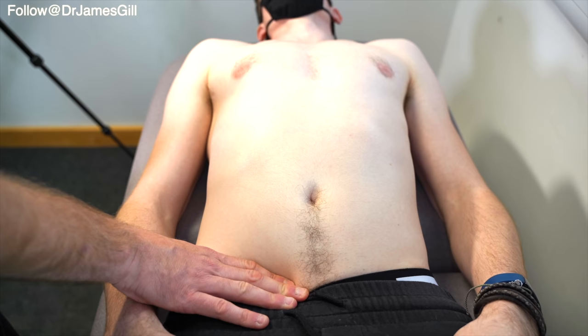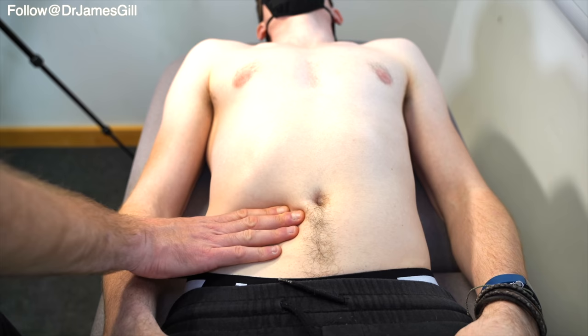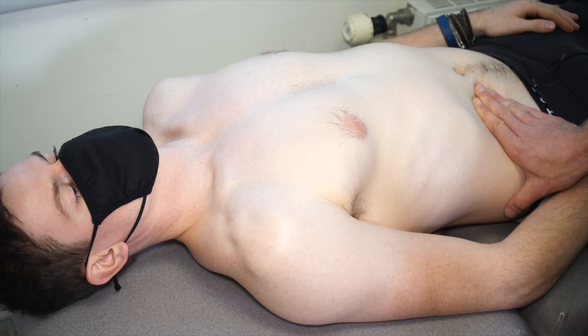After we've done the light and deep palpation we need to do some special examinations for both the spleen and the liver. In both cases we're going to start off in the right iliac fossa and we're going to examine with the leading border of our right hand going up with the patient breathing in and out to get to the costal margin.